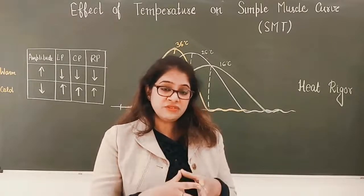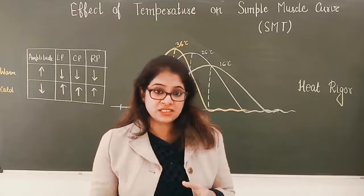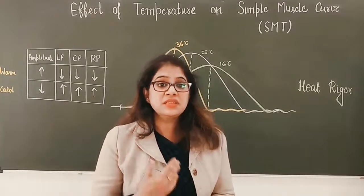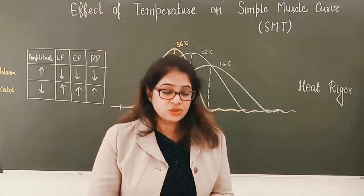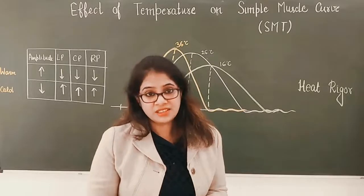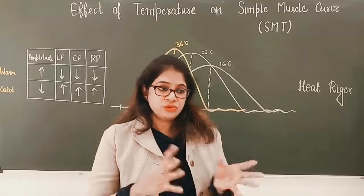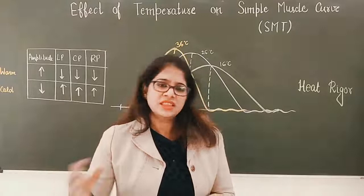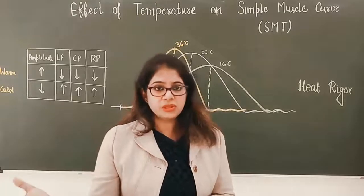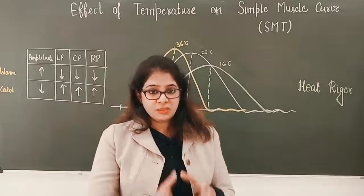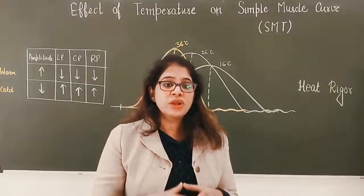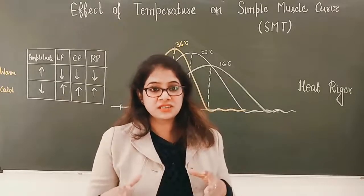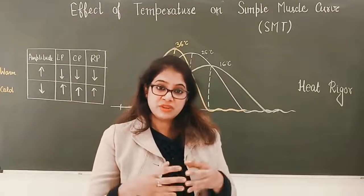Rigor mortis is a state of permanent contraction without relaxation. For relaxation of muscles, ATP is required, but after death we don't have ATP. So a few hours after death — around 15 to 20 hours, maybe 24 hours depending on many factors — the muscles go into permanent contraction with no relaxation.